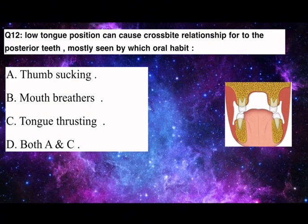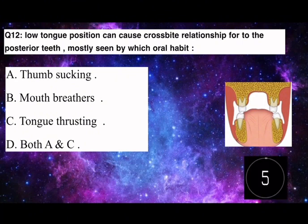Q12. Low tongue position can cause crossbite relationship for the posterior teeth, mostly seen by which oral habit? A. Thumb-sucking. B. Mouth-breathers. C. Tongue-thrusting. D. Both A and C.